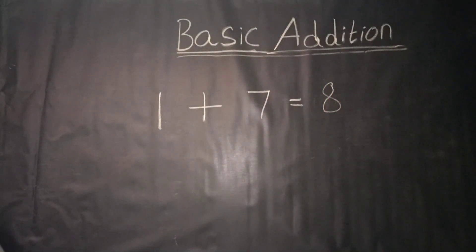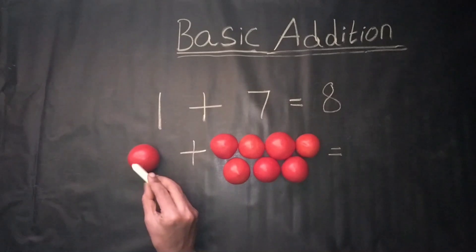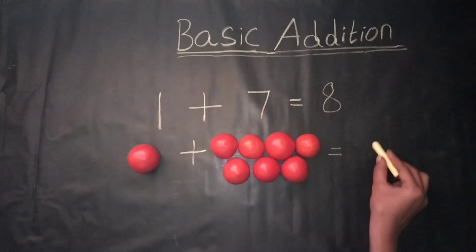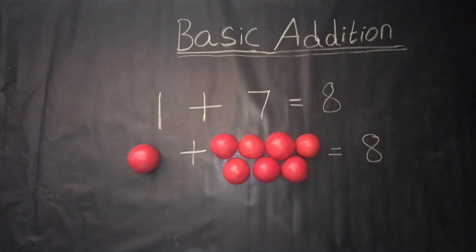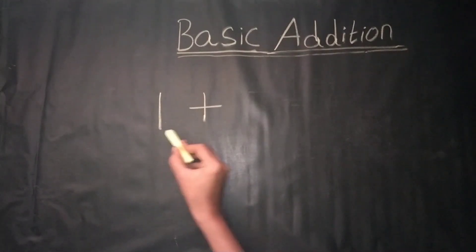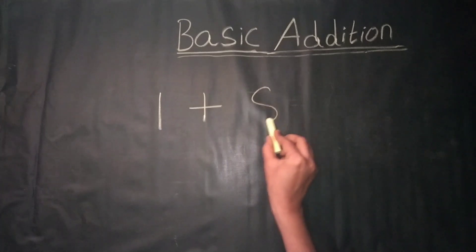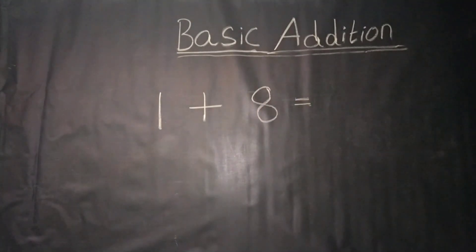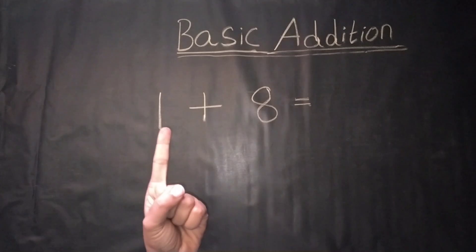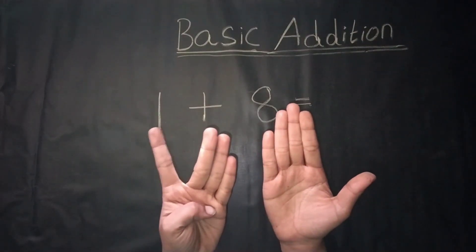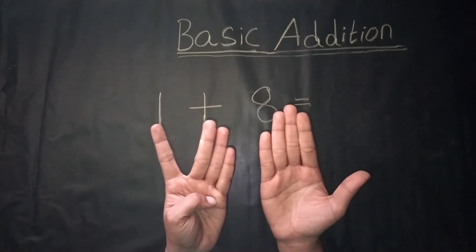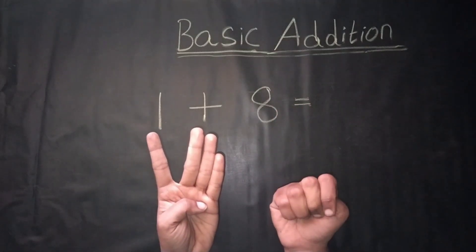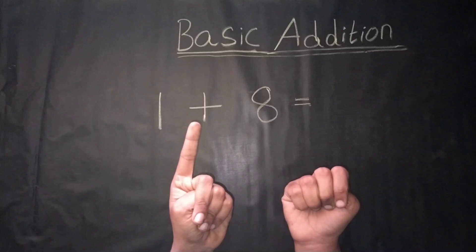Counting by objects, 1 plus 8 — count together: 1, 2, 3, 4, 5, 6, 7, 8.